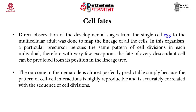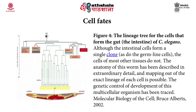The outcome in the nematode is almost perfectly predictable simply because the pattern of cell to cell interactions is highly reproducible and is accurately correlated with the sequence of cell divisions. This diagram depicts the lineage tree for the cells that form the gut or the intestine in C. elegans. Although the intestinal cells form a single clone, the cells of most other tissues do not. The anatomy of this worm has been described in extraordinary detail and mapping out of the exact lineage of each cell is possible. The genetic control of development of this multicellular organism has been traced, and it is a beautiful organism because of its transparent body. One can really observe the fate of each cell proceeding from zygote to the adult stage.